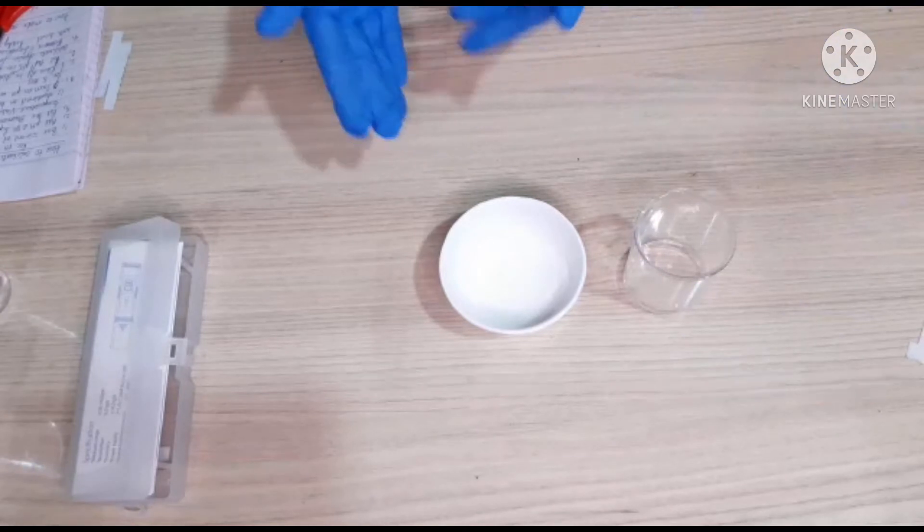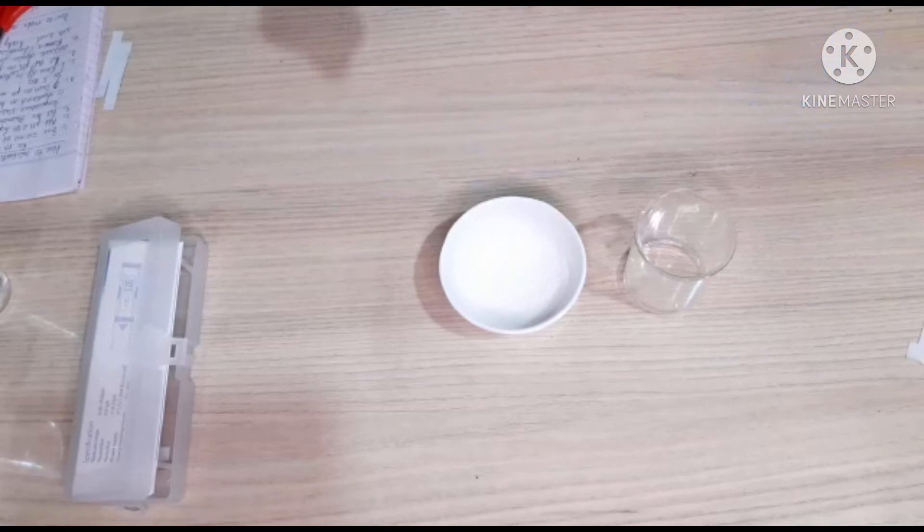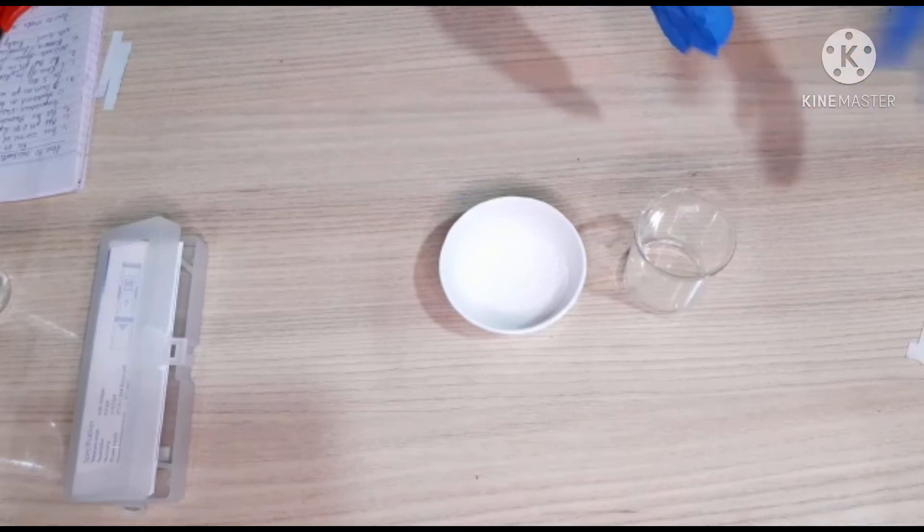Since I have only 10 grams of citric acid, I am making it only for 20 grams. If you want to make a 100 gram batch, you can take 50 grams of citric acid and 50 grams of water. It's so easy.